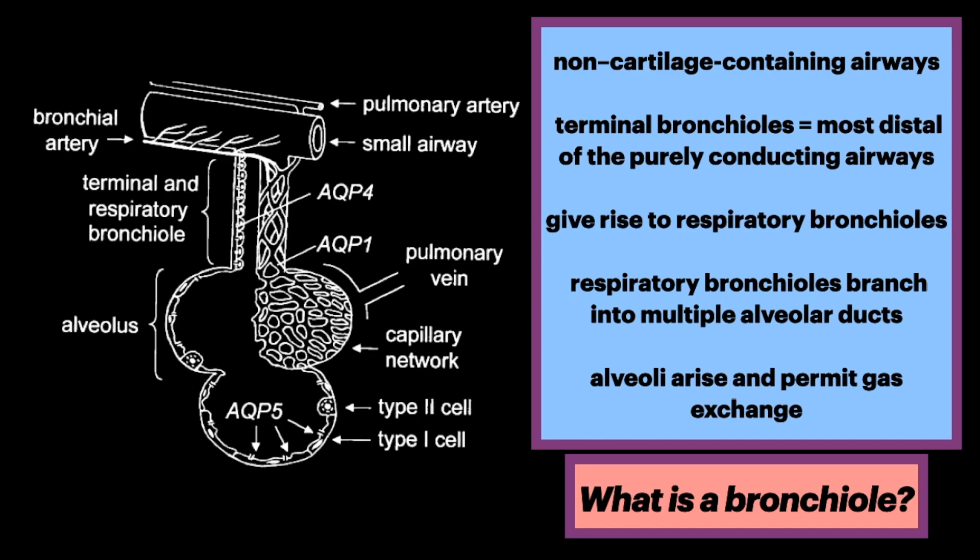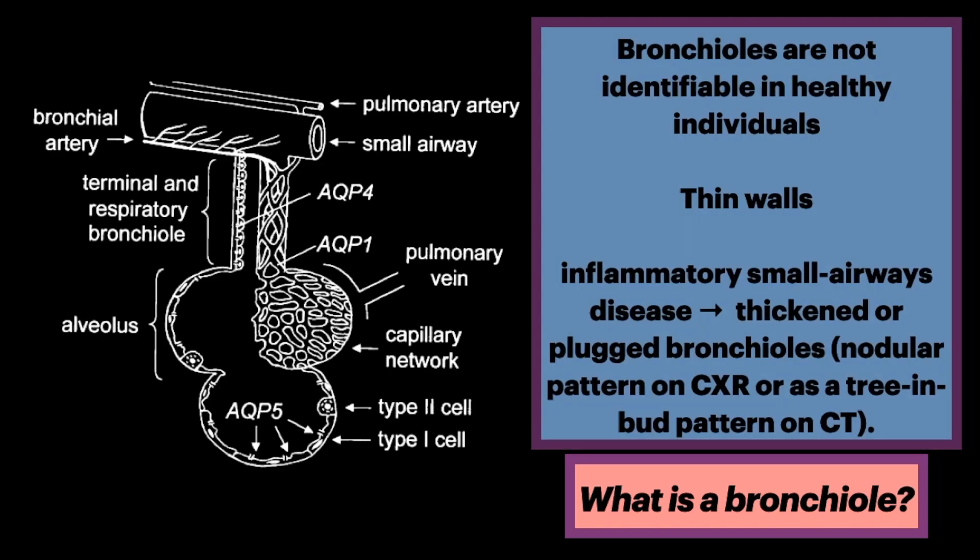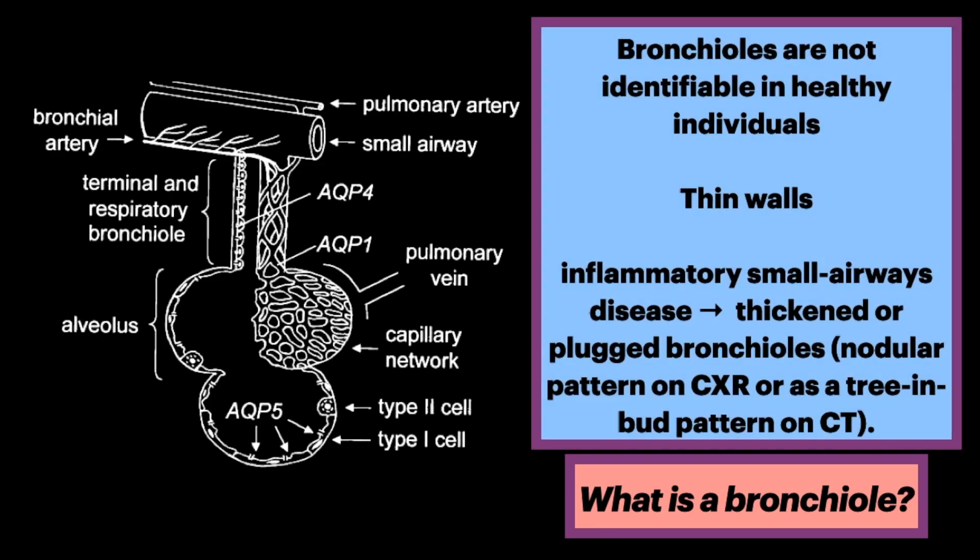Terminal bronchioles give rise to respiratory bronchioles, from which the alveoli arise and permit gas exchange. Respiratory bronchioles branch into multiple alveolar ducts. Bronchioles are not identifiable in healthy individuals because the bronchiolar walls are too thin.